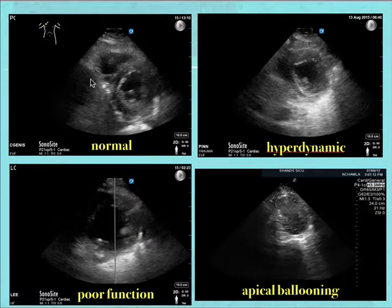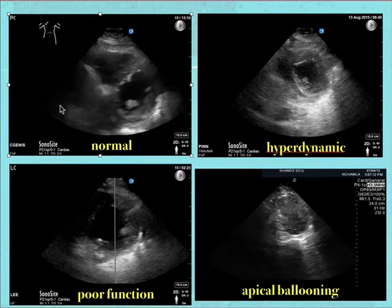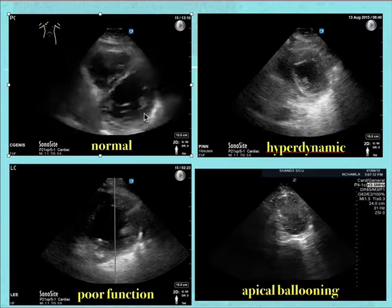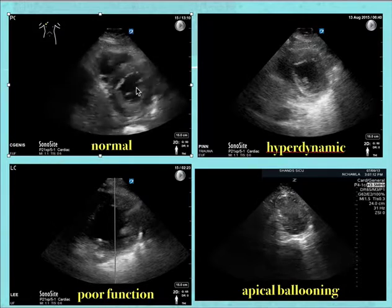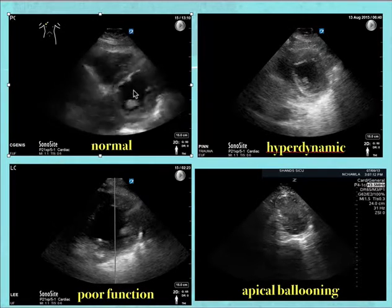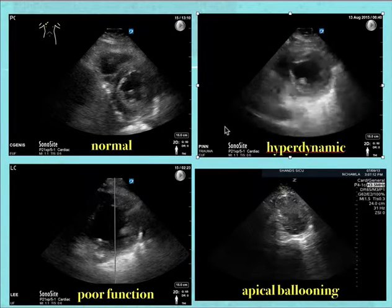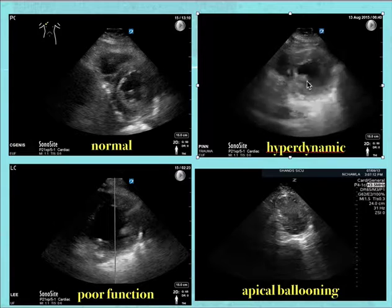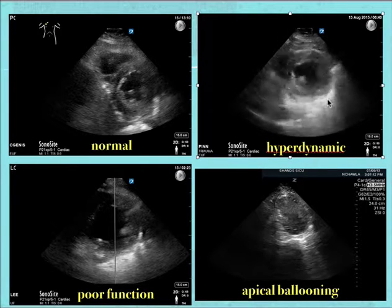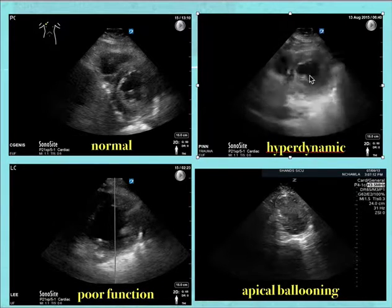Now let's look at short axis views. In a normal view, you see the left ventricle with the papillary muscles, the cavity has blood in it and is not totally obliterating — this is normal LV function. In a hyperdynamic example, always identify the papillary muscle first. If you don't see it, you might be at the apex — and at the apex, it always looks like kissing ventricles or total collapse, so you may overestimate function.